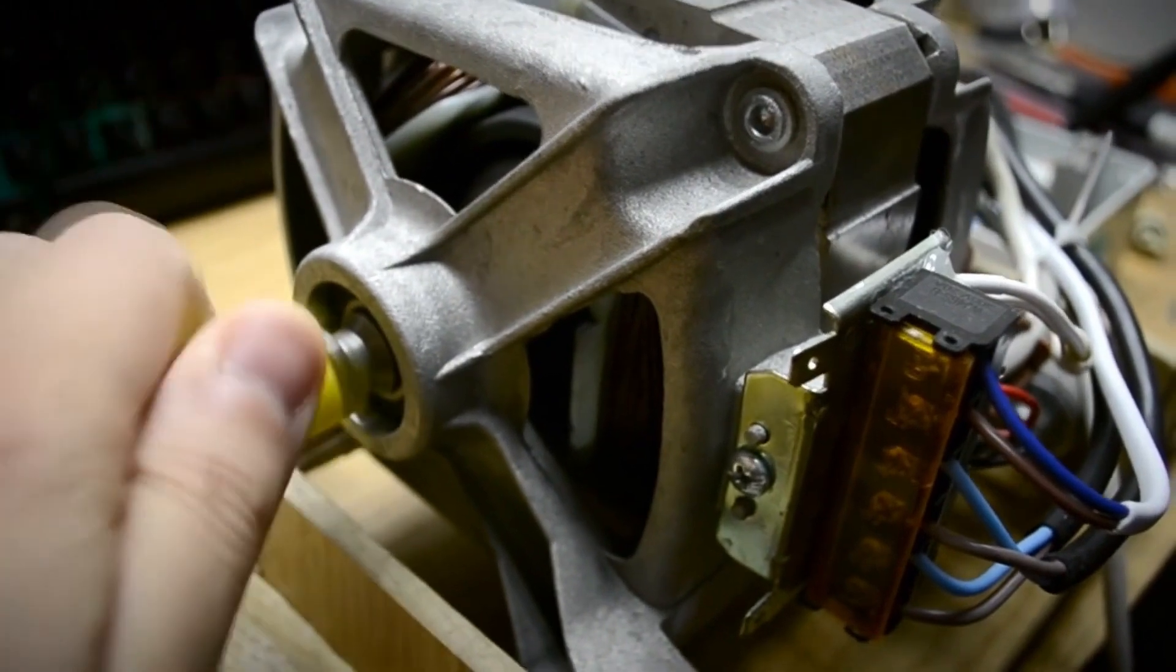If we want more power from such a motor, we need to increase the voltage supplied. However, if a load is applied to the motor shaft, then at the same voltage, the motor without a load will rotate faster, which is obvious.